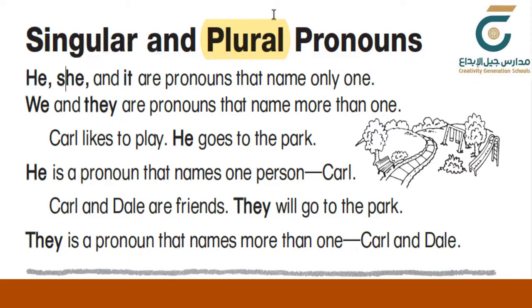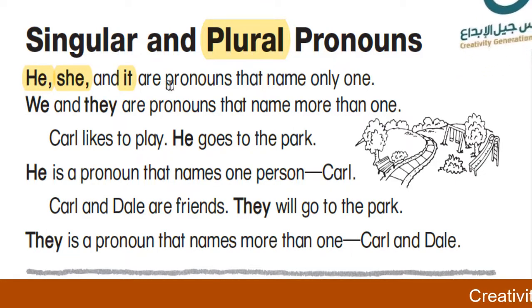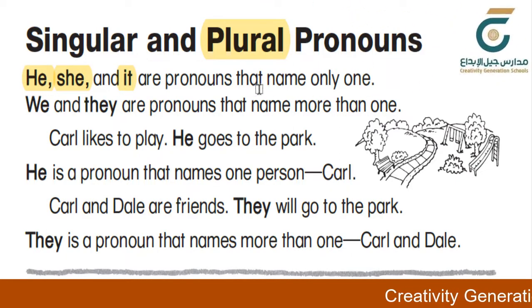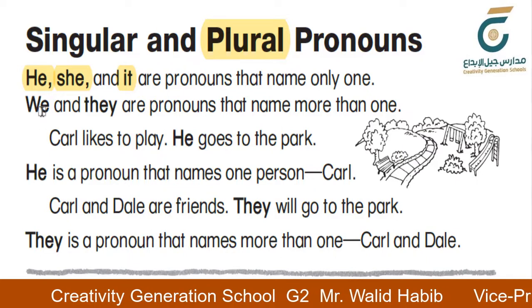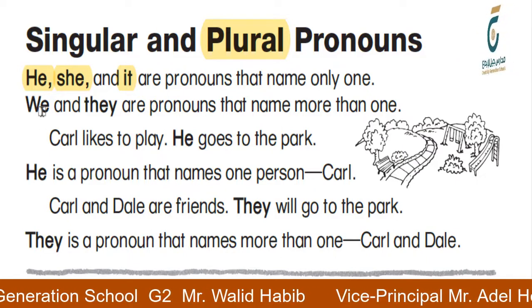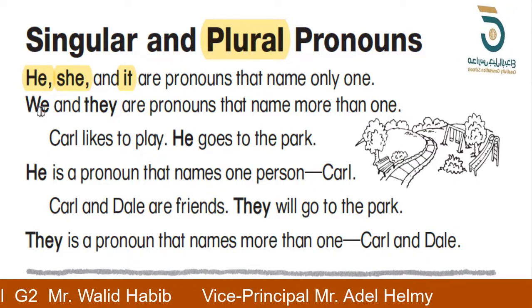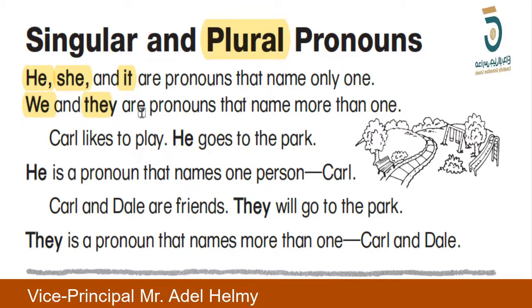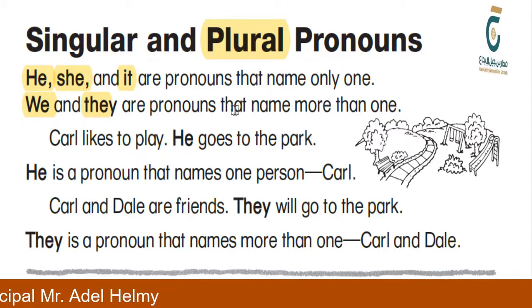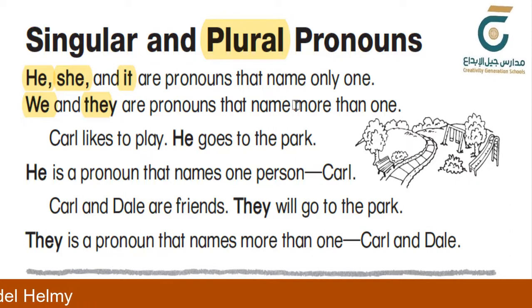He, she, and it are pronouns that name only one. So they are singular. We and they are pronouns that name more than one. So they are plural pronouns.